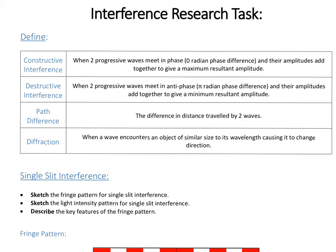We're going to be looking at the interference of multiple sets of waves. One of the key things with the fringe pattern produced by them is knowing the path difference between the waves that are interfering. So if you have two waves, it's the difference in distance travelled by those waves to get to a certain point.